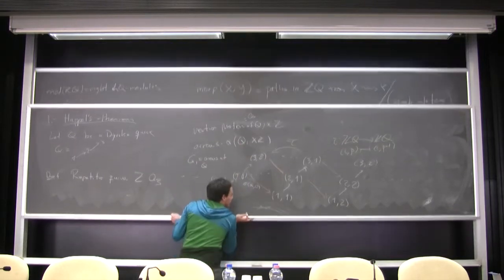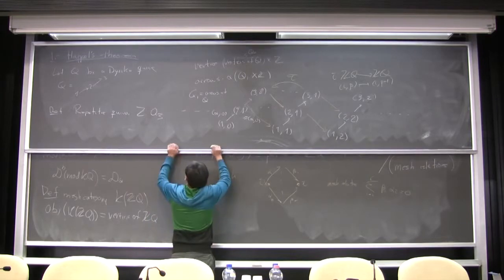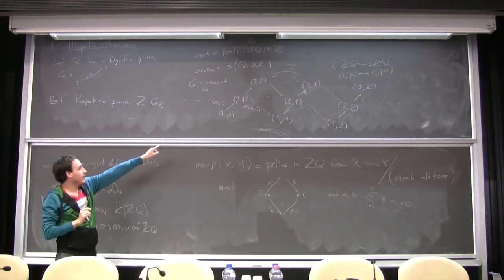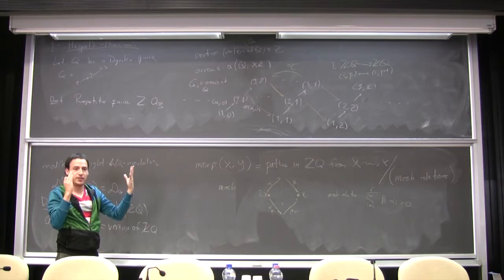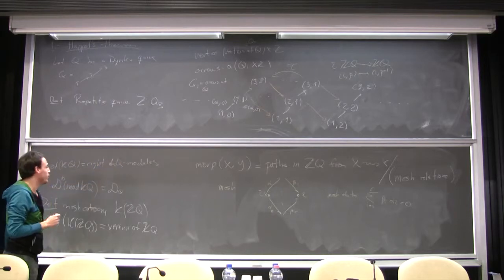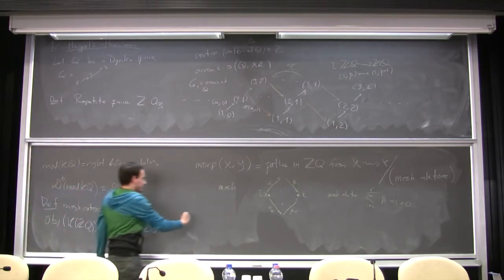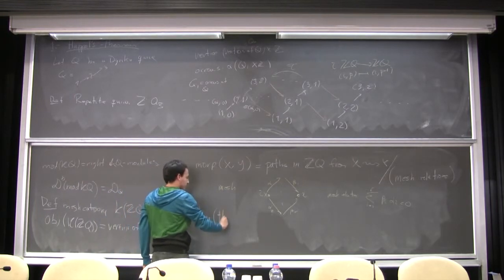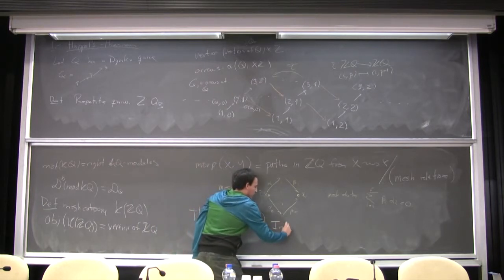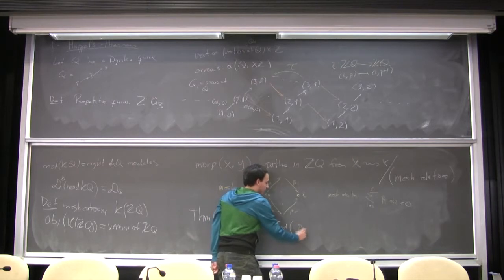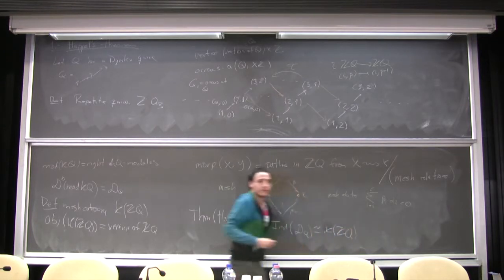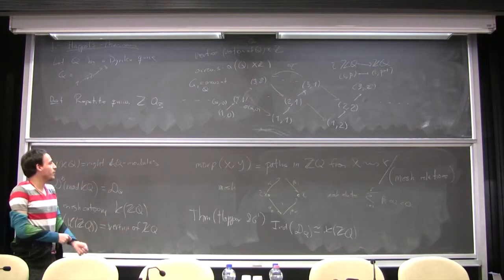So for instance in this example, we get this kind of quiver where the only mesh relations are this one - this path, this path is going to be zero, and we also have this mesh relation saying that this composition is going to be zero. Remember, we are only considering Dynkin quivers. These repetitive quivers are really easy to imagine, to picture in your head, and the mesh relations will look really similar to those ones. The theorem of Happel from 1986 is that the indecomposable objects over the derived category is equivalent to the mesh category of the repetitive quiver.